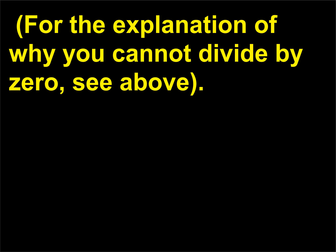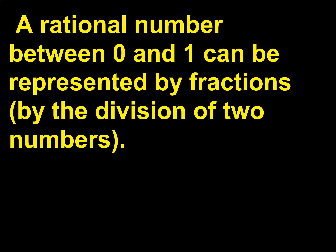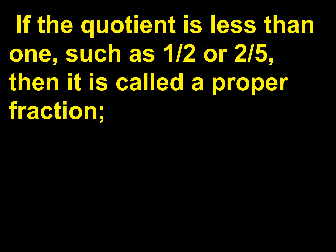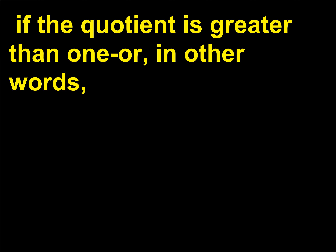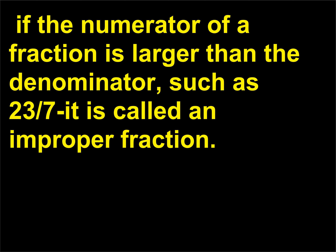A rational number between 0 and 1 can be represented by fractions, by the division of two numbers. If the quotient is less than 1, such as 1/2 or 2/5, then it is called a proper fraction. If the quotient is greater than 1 — in other words, if the numerator of a fraction is larger than the denominator, such as 23/7 — it is called an improper fraction.